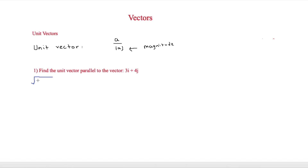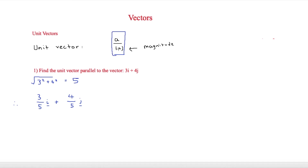The magnitude is the square root of 3 squared plus 4 squared, which equals 5. Therefore the unit vector is 3 over 5 i plus 4 over 5 j, dividing each component by the magnitude of 5. That is your final answer when asked to find a unit vector parallel to another vector. Make sure you learn this method and how to work out the magnitude.